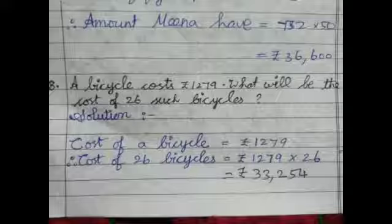Cost of one cycle is equal to 1279. Therefore cost of 26 bicycles is equal to rupees 1279 multiply by 26. Do the multiplication in the rough column children and start with the answer in the fair column. It is rupees 33,254.